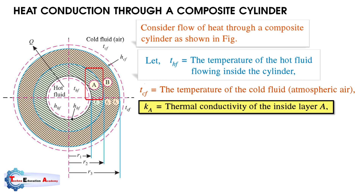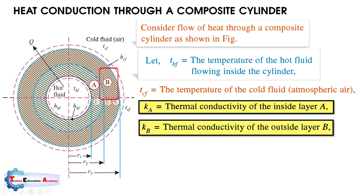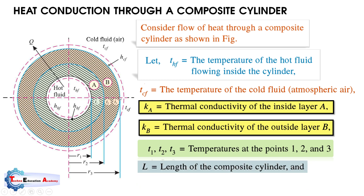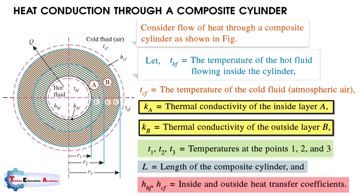Here we are considering two layers — you can also consider three or four, but for simplicity we consider two layers on the wall of the cylinder. K_a is the thermal conductivity of the inside layer A, K_b is the thermal conductivity of the outside layer B, and T1, T2, T3 are the temperatures at points 1, 2, and 3 respectively. L is the length of the composite cylinder. H_hf is the heat transfer coefficient for the hot fluid and H_cf is the heat transfer coefficient for the cold fluid, considered in the case of convection.